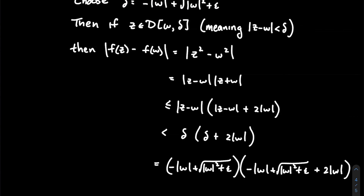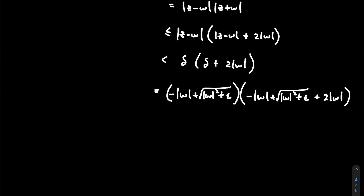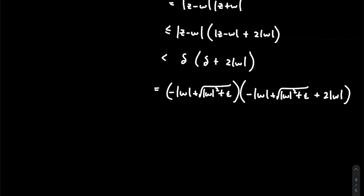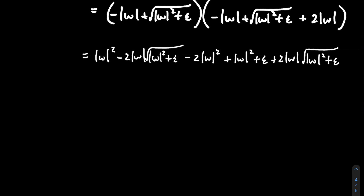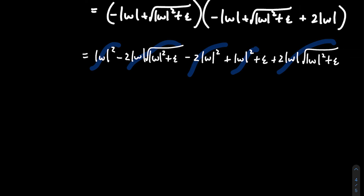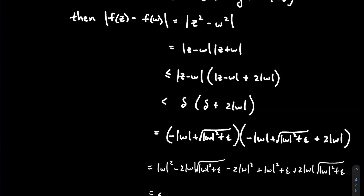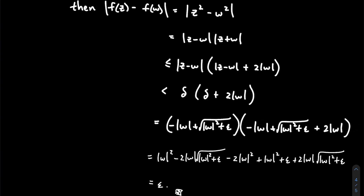Now I substitute our chosen delta into delta · (delta + 2|W|) and foil it out. When the dust settles, terms cancel — the cross terms and the 2|W| terms vanish — and all that remains is epsilon. So |F(Z) - F(W)| < epsilon. That's the punch line — we win the game. We've shown that F(Z) = Z² is continuous at any point inside the disk D(0,1), so F is continuous on D(0,1).